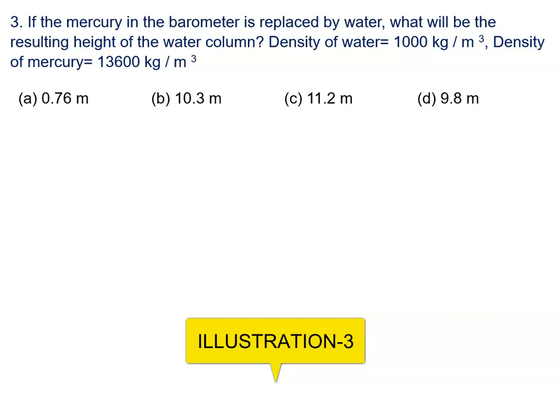It doesn't matter if you are filling water, mercury, or any liquid—pressure will remain the same. It means pressure created by the mercury column must equal pressure created by the water column. Pressure is given by h rho g.